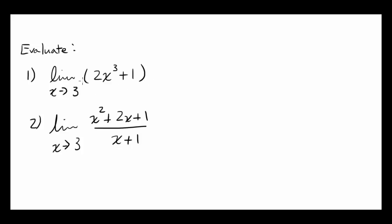The easiest way of doing this is just plugging 3 into x. So it's going to be 2 times x, which is 3, cubed plus 1. And that's going to come out to be 2 times 27 plus 1, or 55.